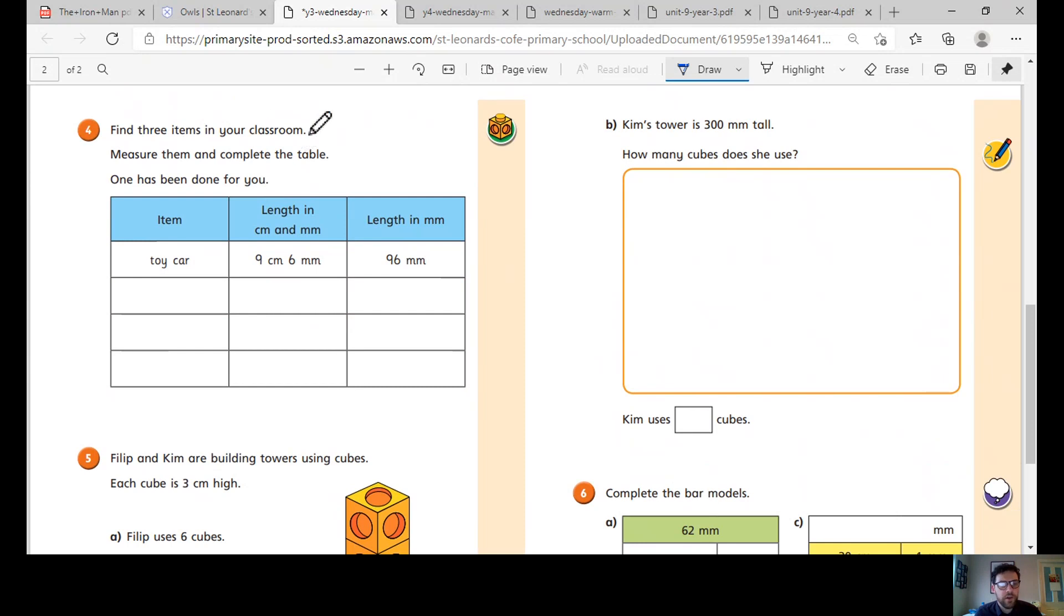Find three items in your classroom at home, anywhere in your house that you can find. Measure them and complete the table. One has been done for you, so a toy car was nine centimetres, six millimetres, and 96 millimetres altogether.